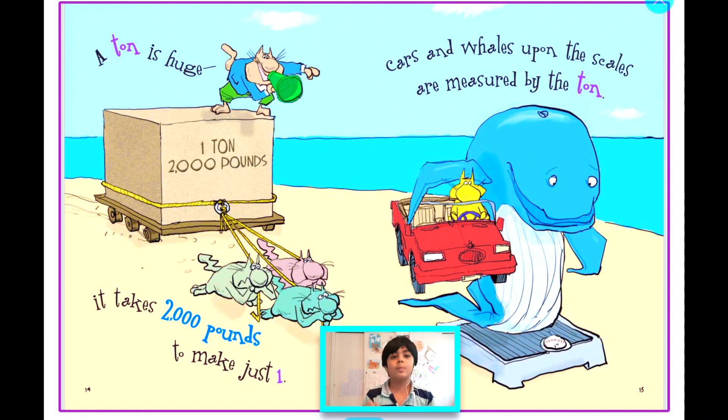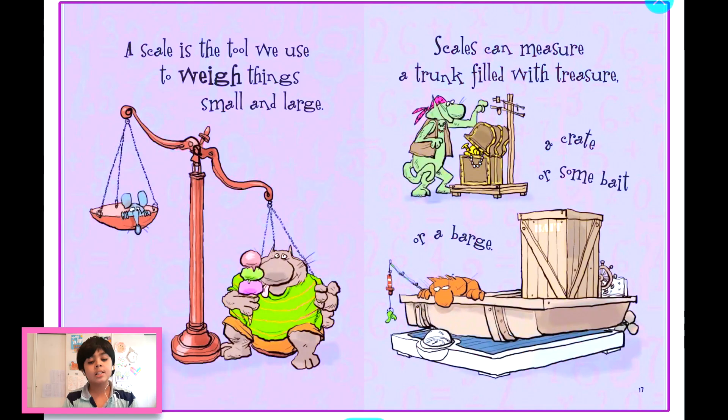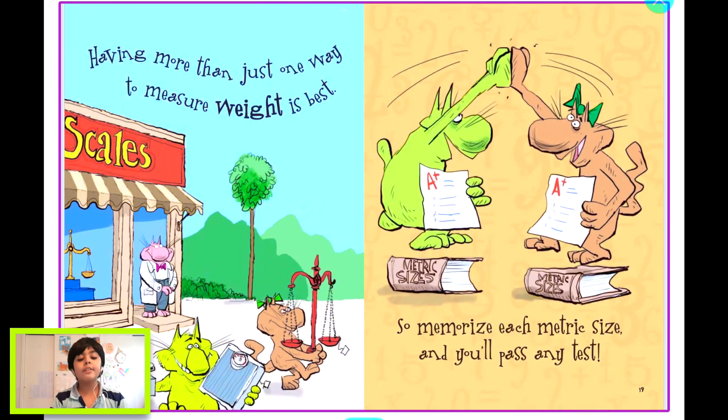A ton is huge—it takes 2,000 pounds to make just one ton. Cars and whales upon the scales are measured by the ton. A scale is the tool we use to weigh things small and large. Scales can measure a trunk filled with treasure, a crate, some bait, or a barge.